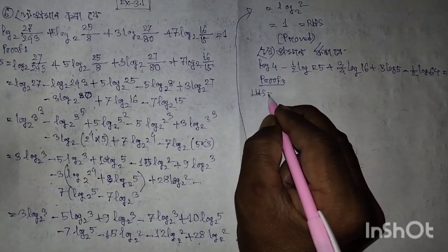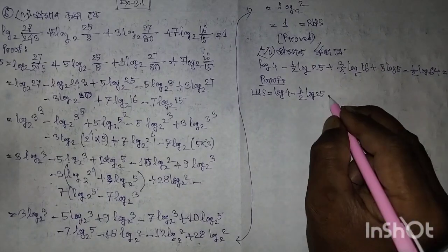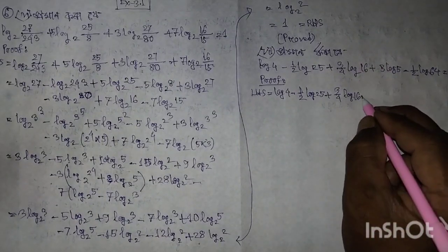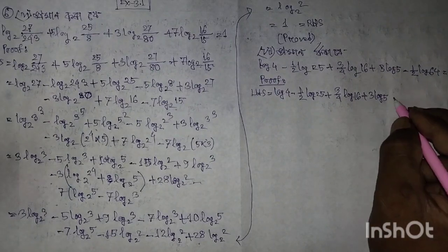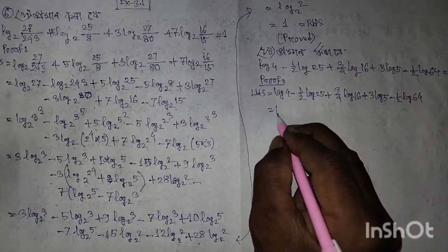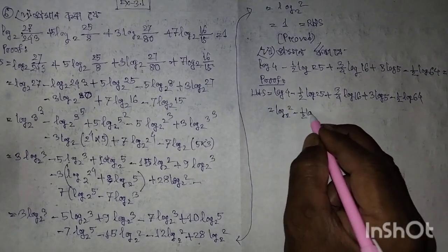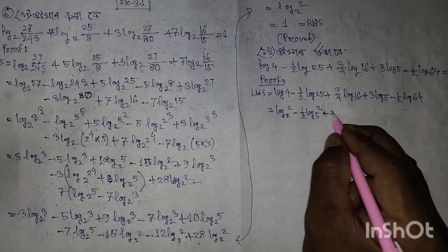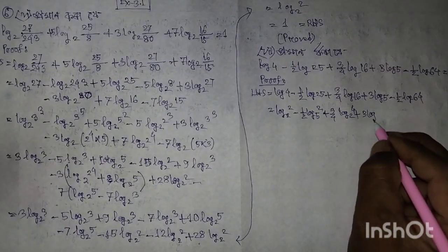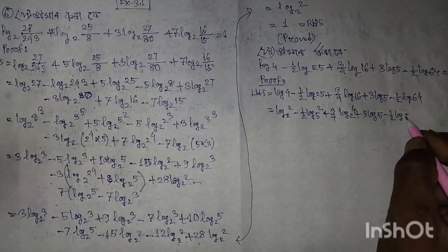Left-hand side: log 4, minus half log 25, plus 3 by 4 log 16, plus 3 log 5, minus half log 64, equal to log 2 squared, minus half log 5 squared, plus 3 by 4 log 2 to the power 4, plus 3 log 5, minus half log 2 to the power 6.